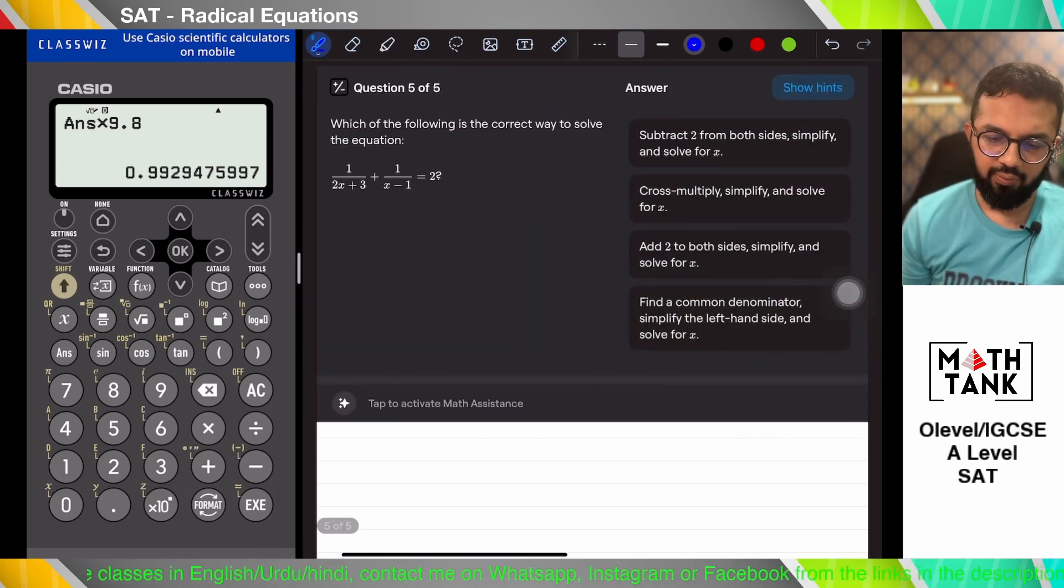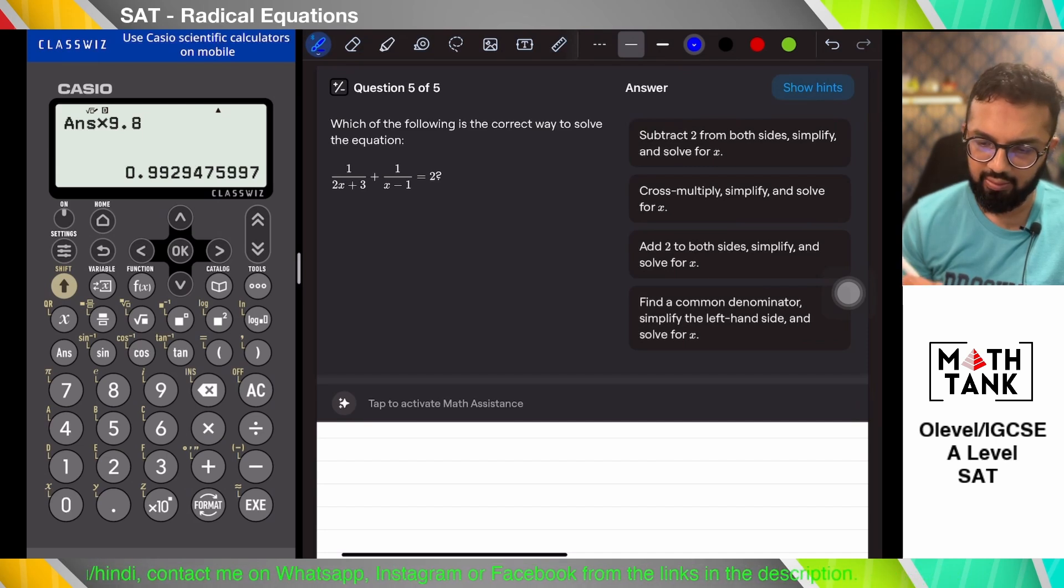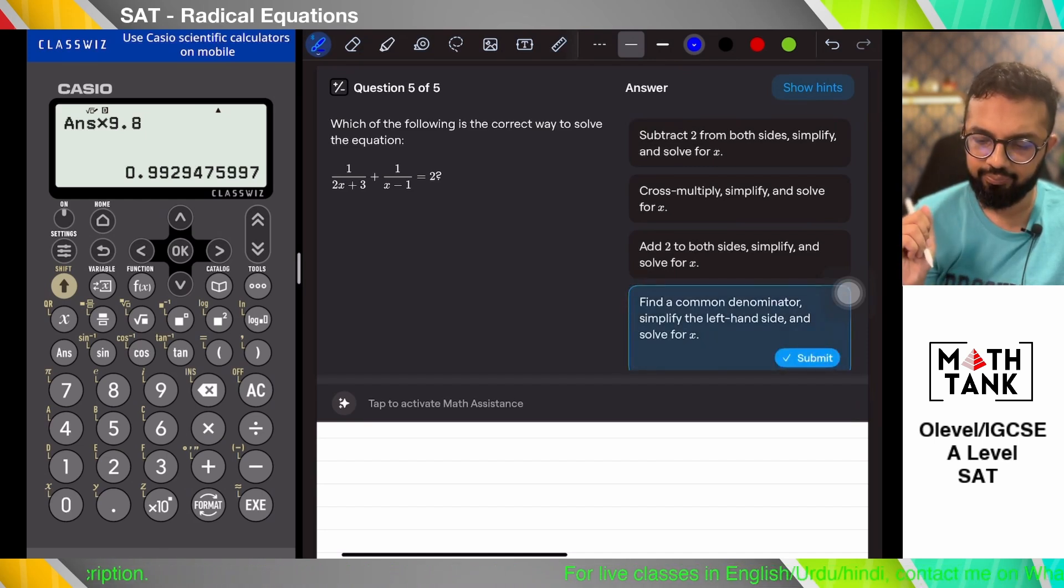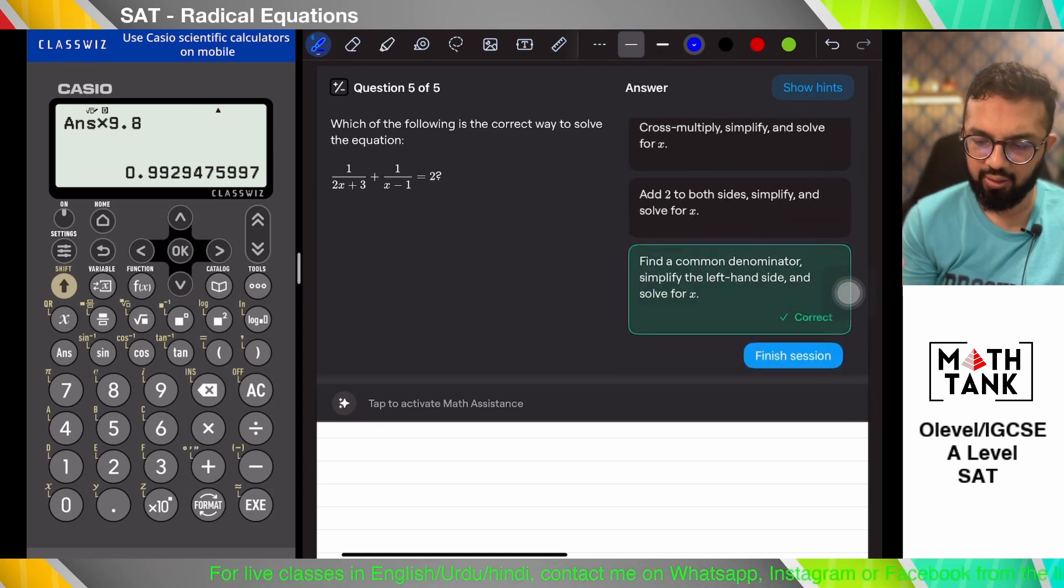Question number 5. Which of the following is the correct way to solve the equation? Subtract 2 from both sides, simplify and solve for x. Cross multiply simplifying. Find a common denominator. I think that should be the best way out. Yep.